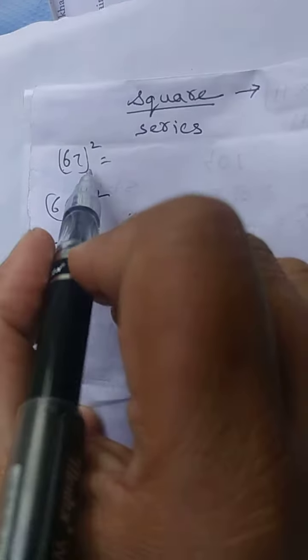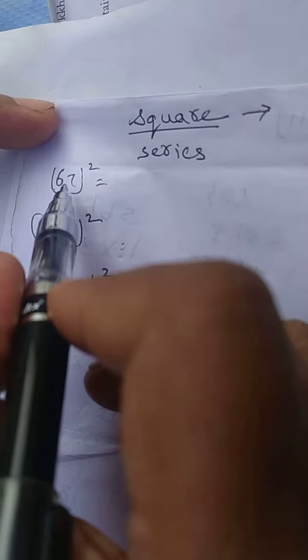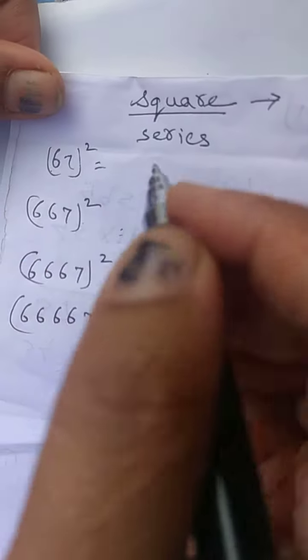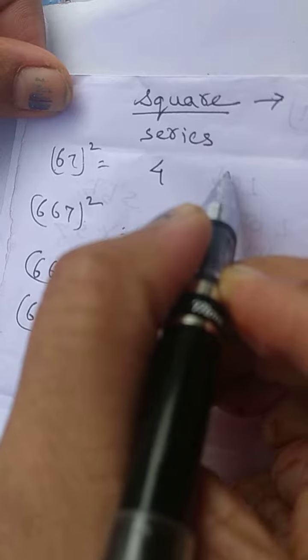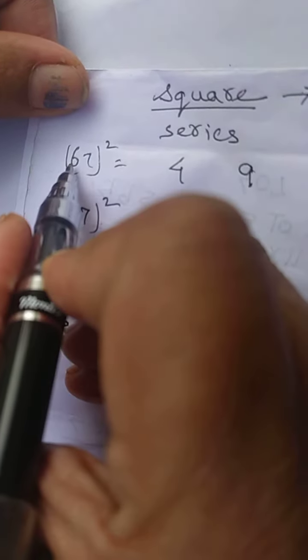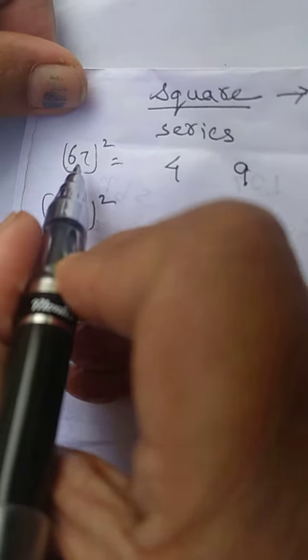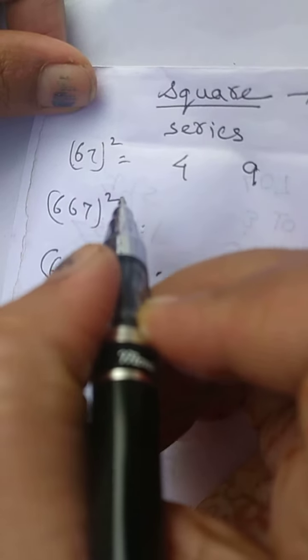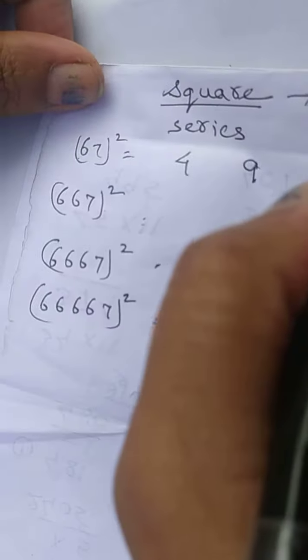For 67 square, you know the square of 7 is 49. Just write 4 and 9, keeping space in between. When there is 6, always take 48. Don't forget - whenever there is 6, you have to take 48.